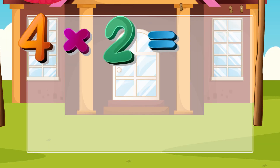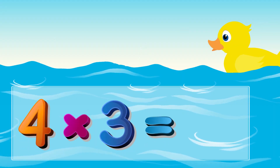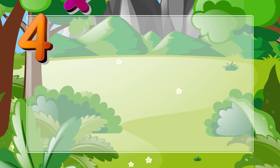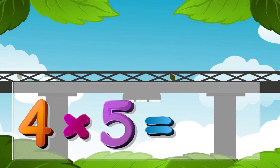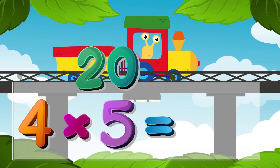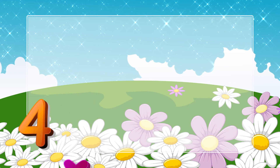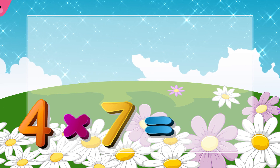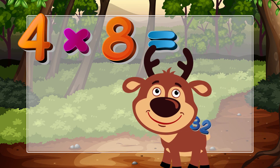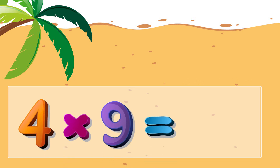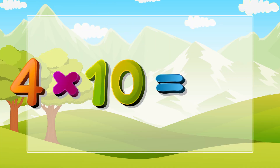Let's sing again. Four times two is eight, four times three is twelve, four times four is sixteen, four times five is twenty, four times six is twenty-four, four times seven is twenty-eight, four times eight is thirty-two, four times nine is thirty-six, four times ten is forty.